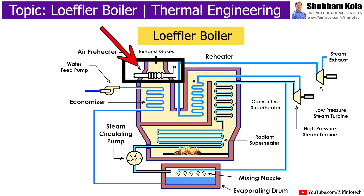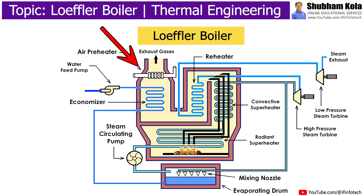The air preheater is used to increase the temperature of air before it is supplied to the combustion chamber for combustion of fuel. The main purpose of the air preheater is to recover heat from exhaust gases to improve boiler efficiency.